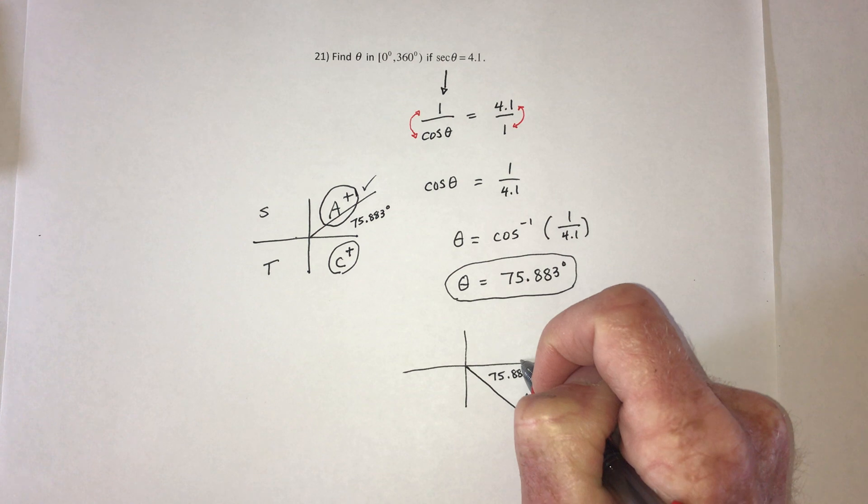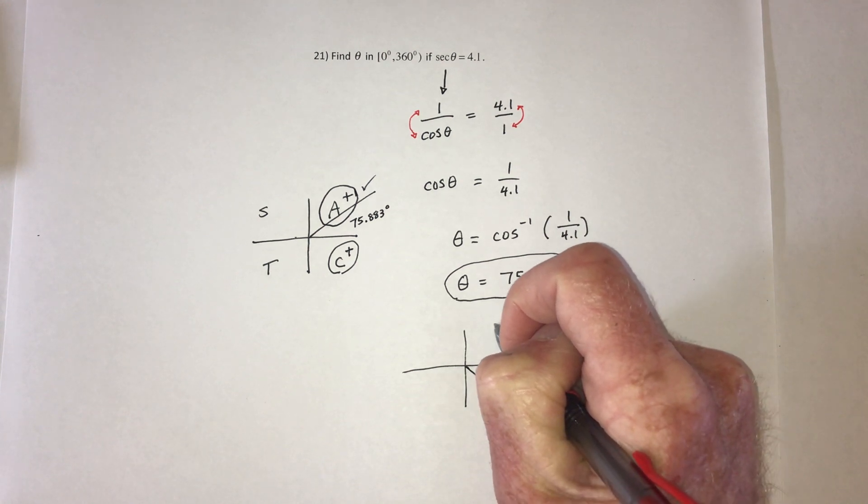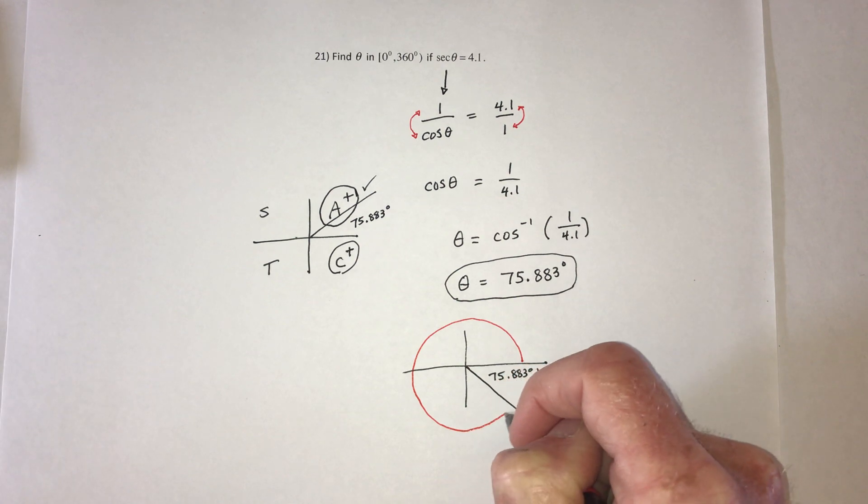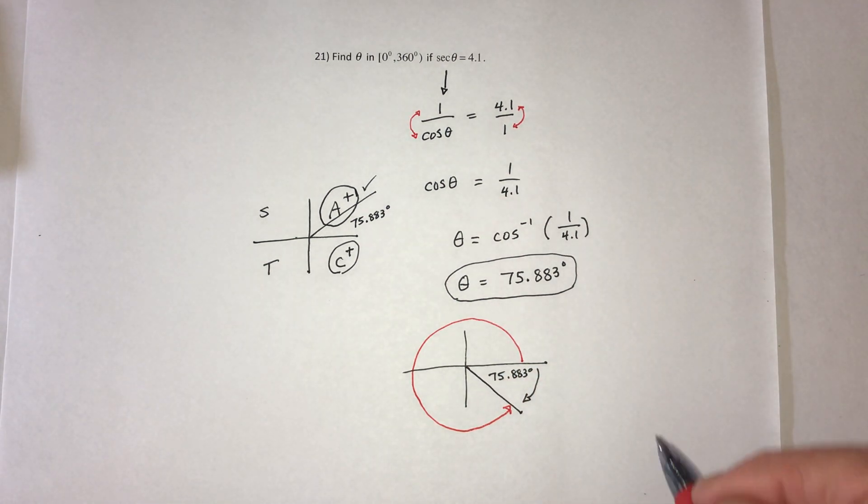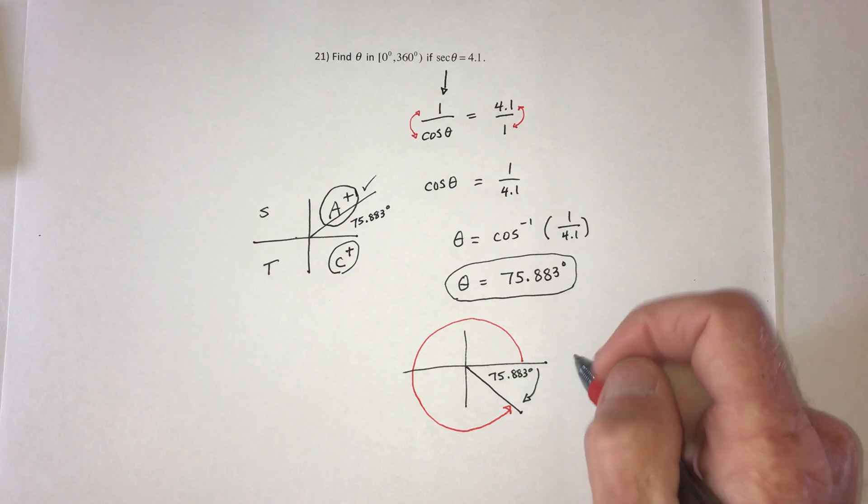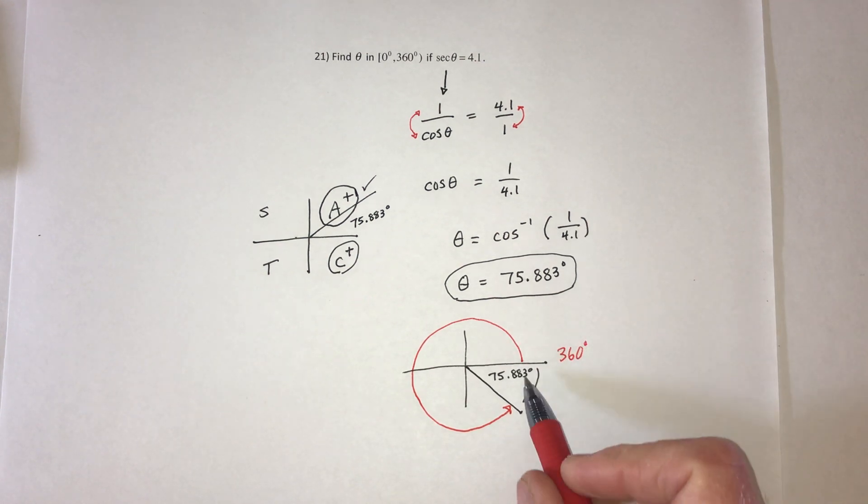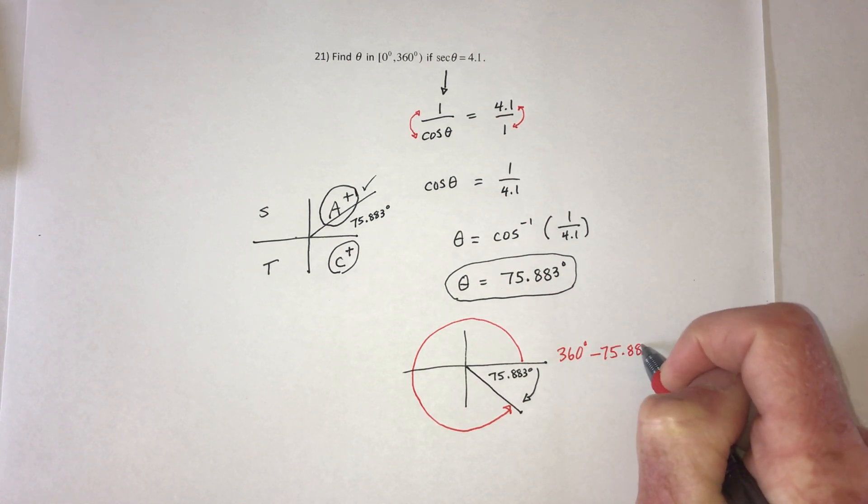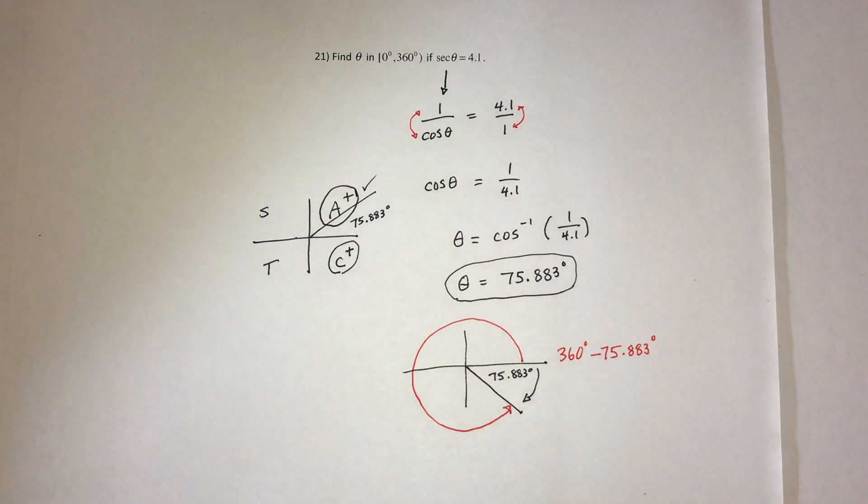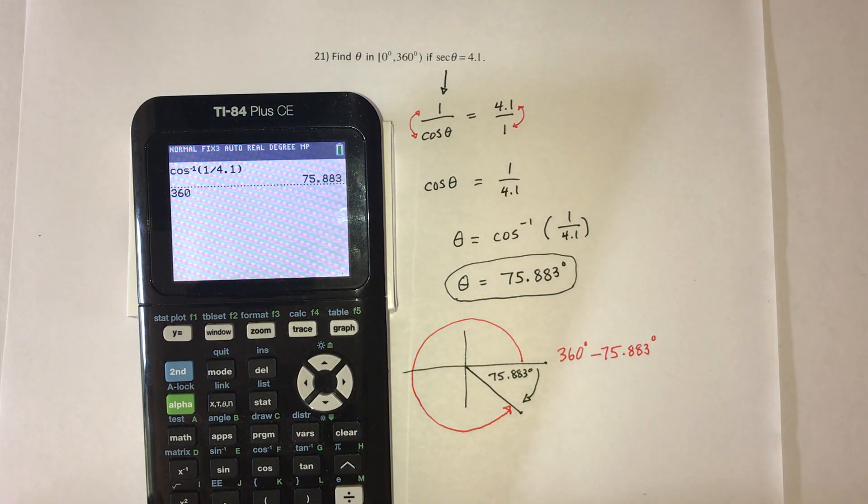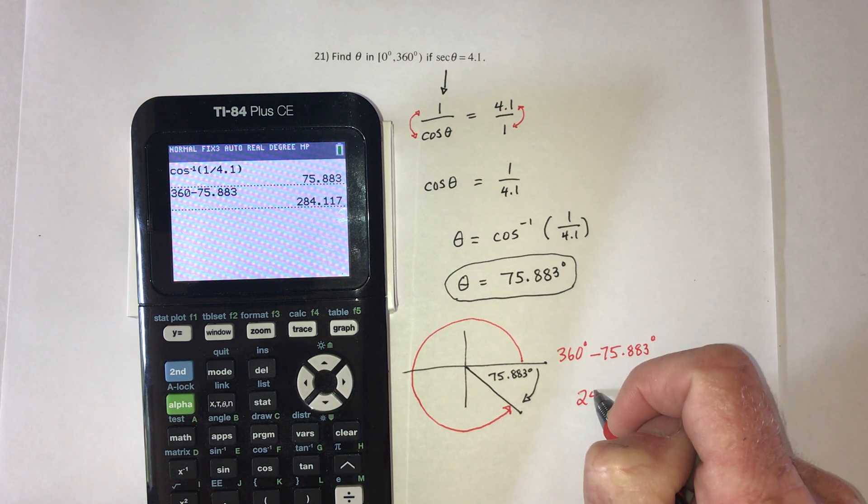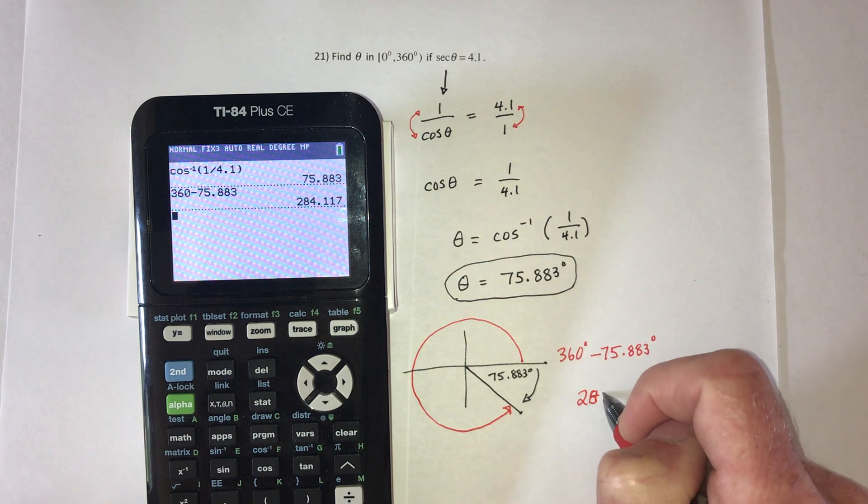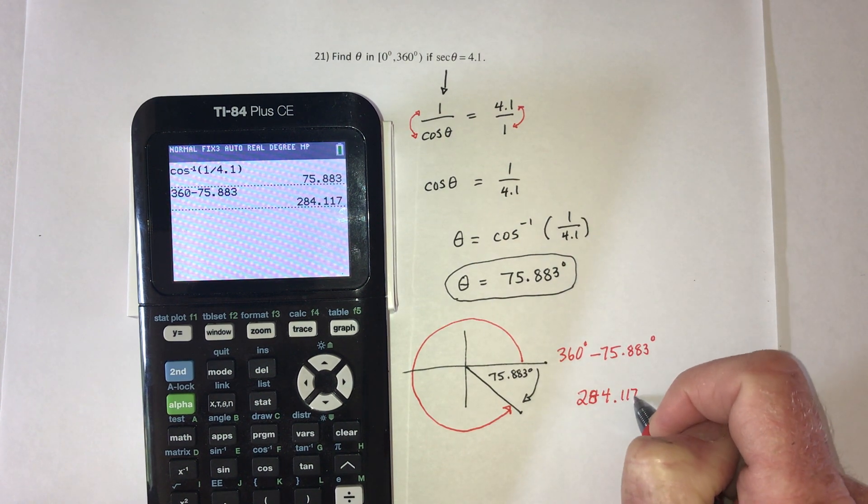And for the last part, to find out what angle that is, start on the x-axis, go around almost a whole circle until you get to right there. So the whole circle would be 360, but if you just subtract off this part, then you'll get the red angle. So how much is 360 minus the 75.883? 240, oops, I mean 284.117 degrees.